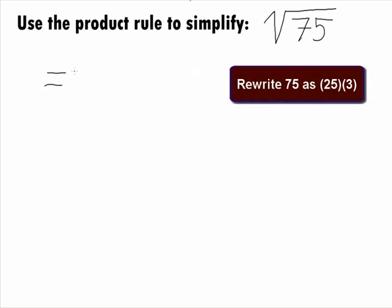We can rewrite 75 as 25 times 3 and get the square root of the product 25 times 3.